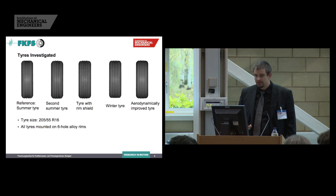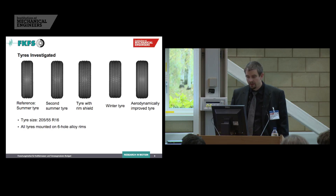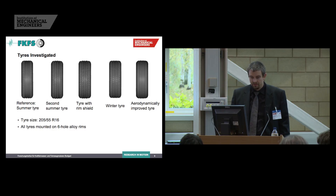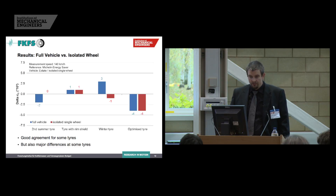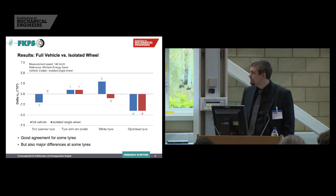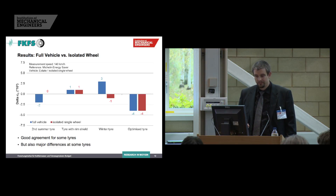We looked at five different tires. Our reference tire is the good production tire seen earlier. Then we used a second summer tire, one tire with a rim shield, one winter tire, and the already-seen aerodynamically improved tire. All were in the same tire size 205/55 R16 and all were mounted on the same rim with six holes. Comparing the results from the full vehicle measurements and the isolated wheel setup, we see the delta between each tire and the reference tire — and for the optimized tire and the tire with a rim shield, there's quite good agreement.